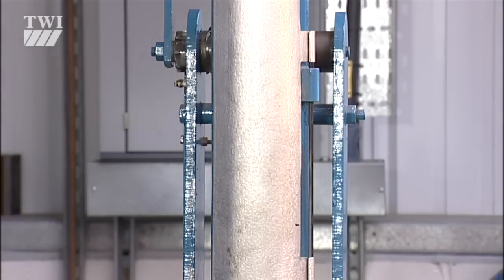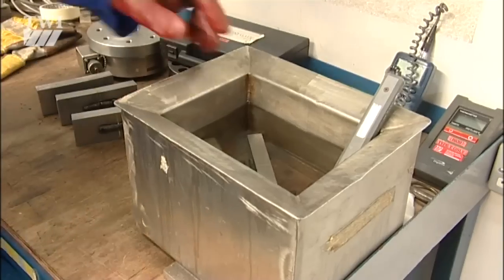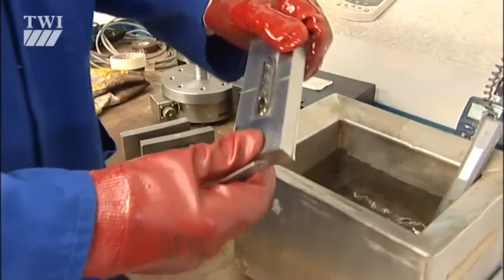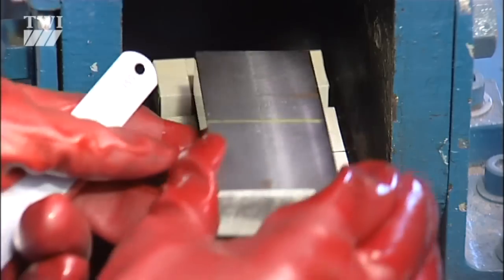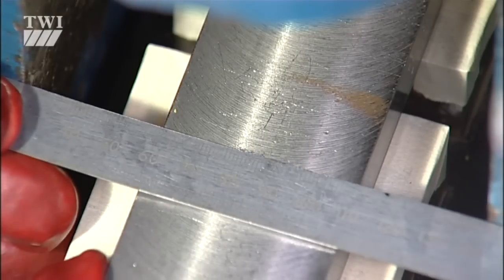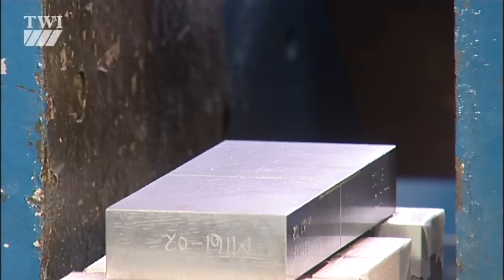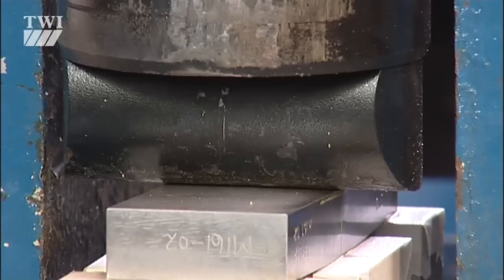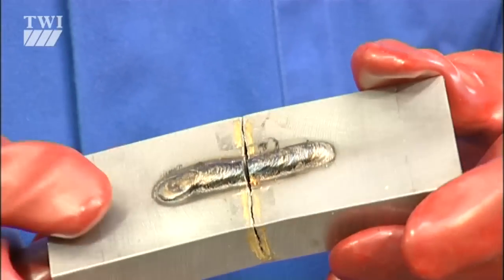Typical of these is the Nil Ductility Temperature Test. It's confusingly dubbed the NDT Test. The sample size is standardised, depending upon plate thickness. A brittle crack is introduced on one side, and the simply supported specimen is struck in a standard way. The test is carried out on a number of specimens at progressively lower temperatures, until the test piece breaks in a brittle fashion. This is known as the Nil Ductility Temperature, or NDT.